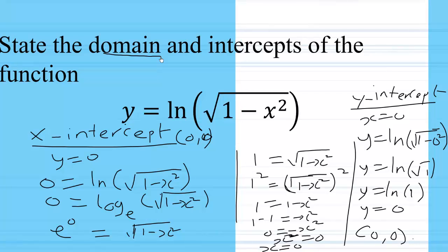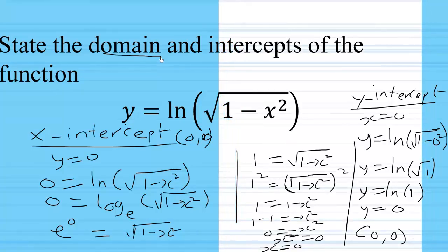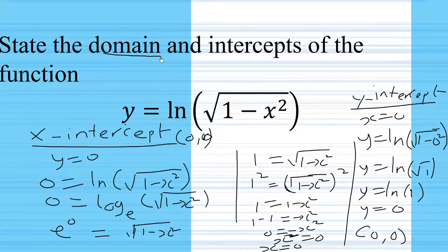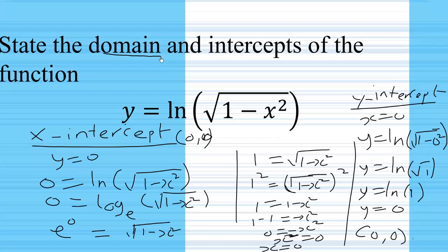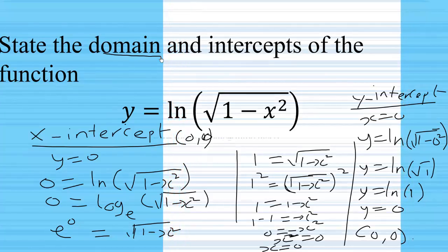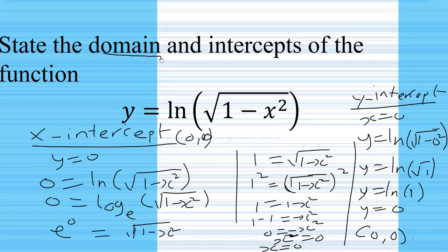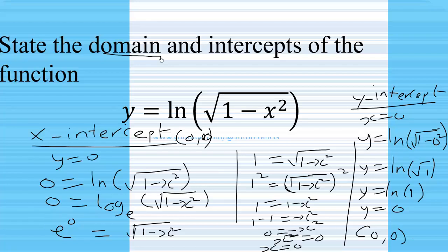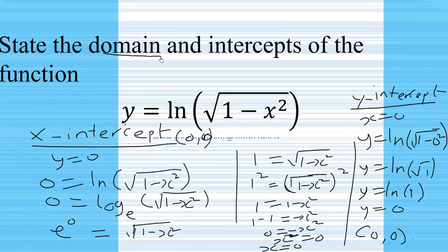So we've found the domain and the intercepts of the function. The domain is the open interval from negative 1 to 1. The x-intercept and y-intercept both happen to be the same point: (0, 0).